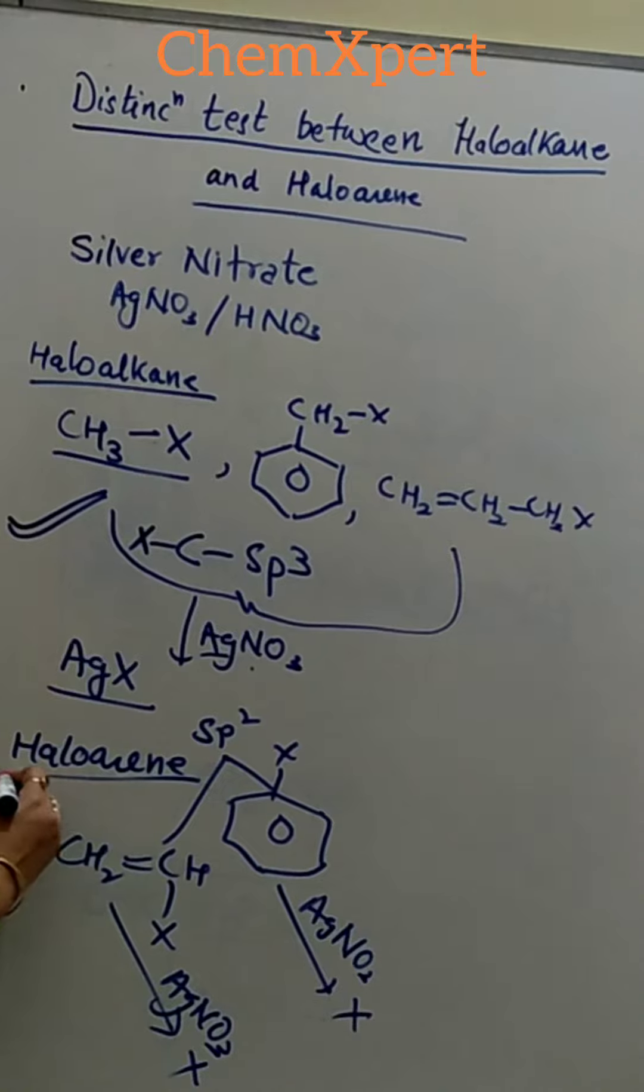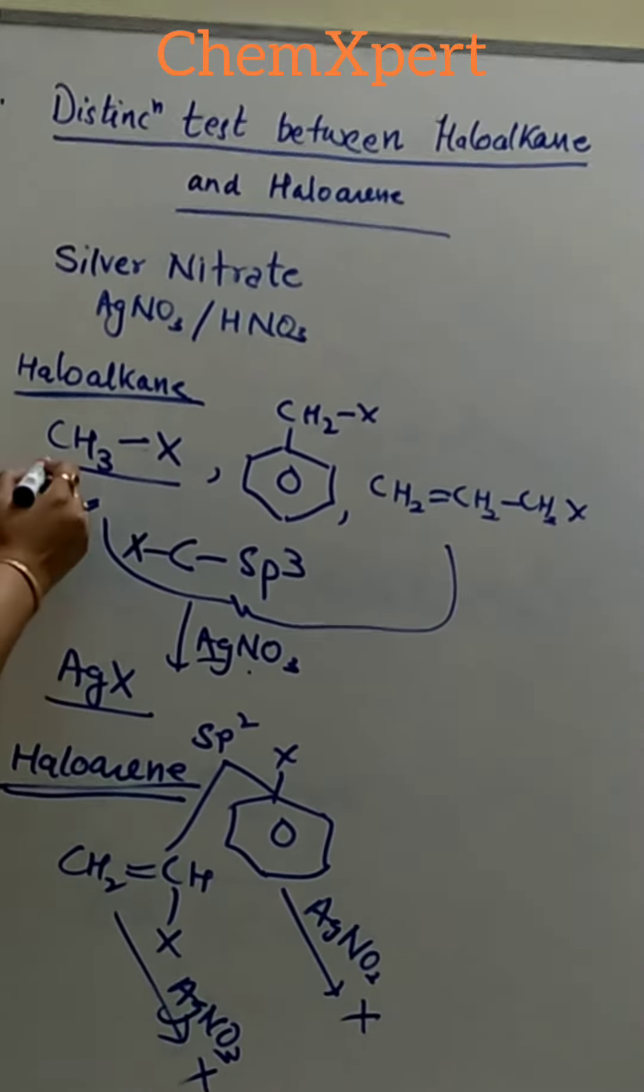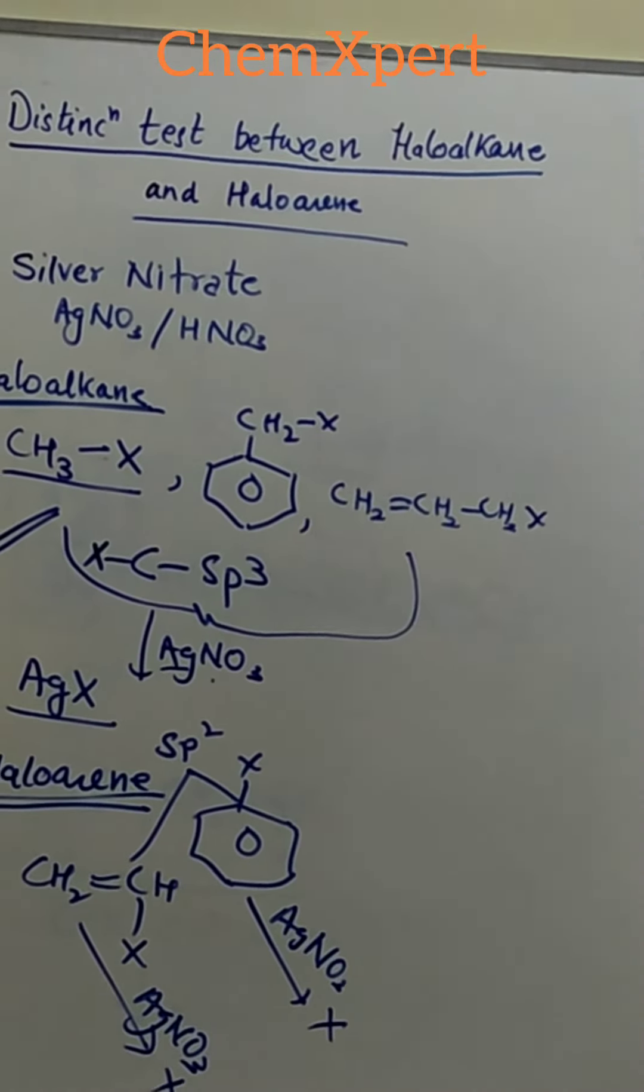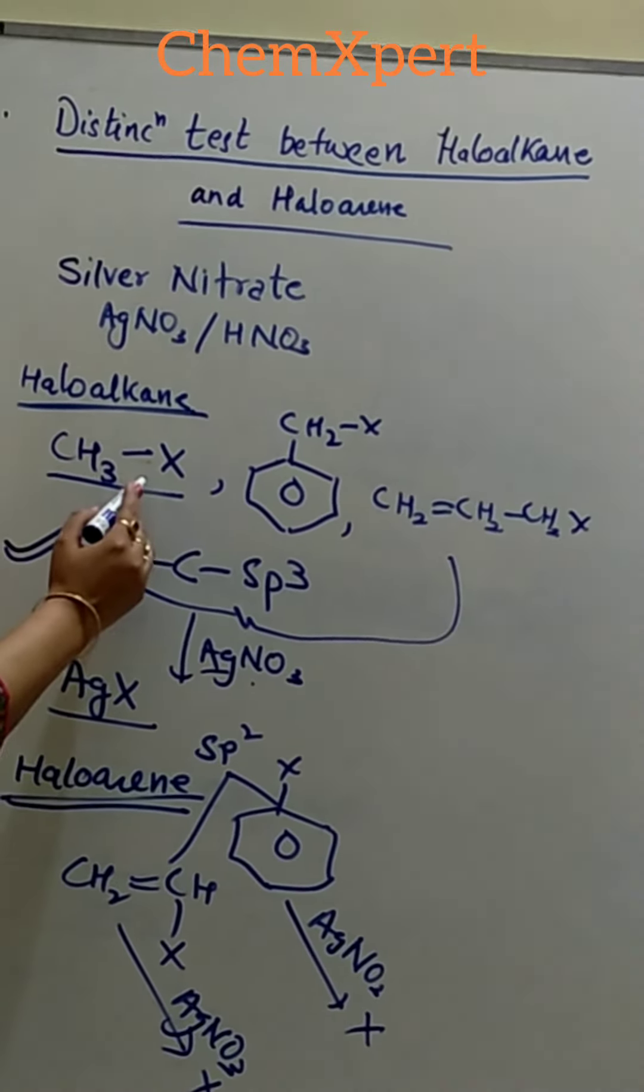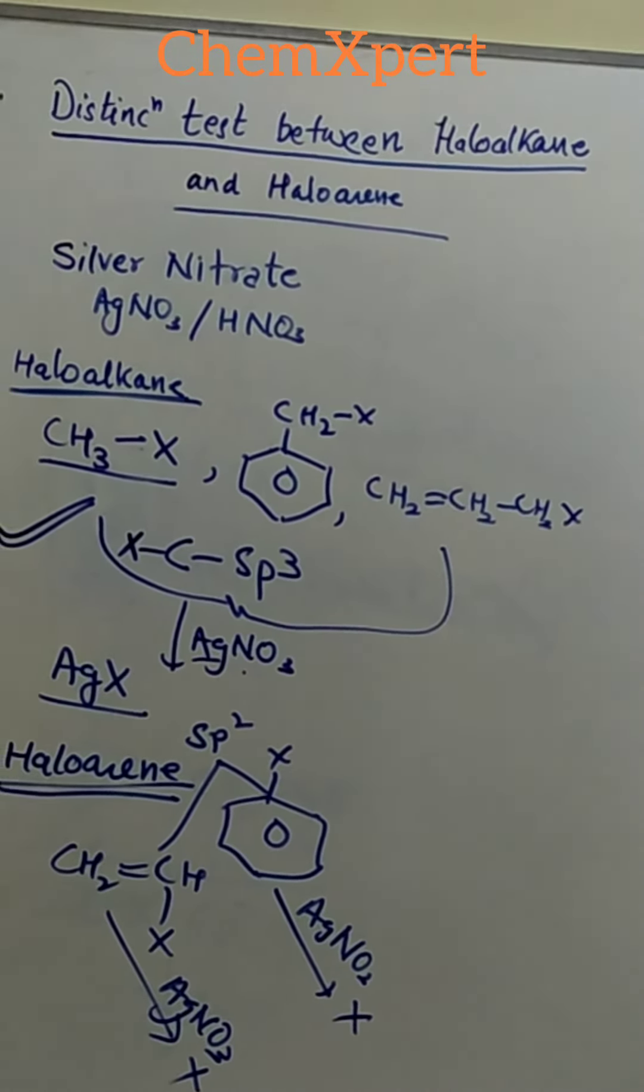So this test easily distinguishes between the two. If we are given an example of methyl chloride and chlorobenzene, then methyl chloride will give AgNO3 test, but haloarene will not give AgNO3 test.